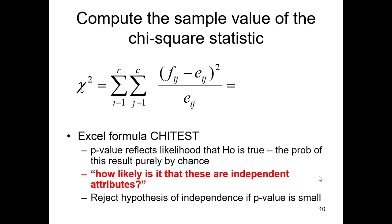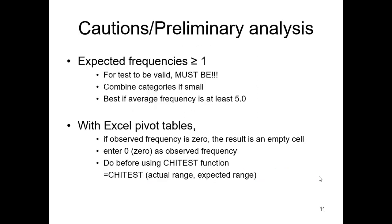Or we could use the chi-test function in Excel. And we'll show how to do that in a different tutorial. The p-value reflects the likelihood that H0 is true, probability of result clearly by chance. The bigger that p-value is, less likely we are to reject H0. Smaller the p-value is, more likely we are to reject H0. A couple of things to keep in mind as we do this: the expected frequencies must be greater than or equal to one for the test to be valid. So very similar to what we had with goodness of fit. Combined categories if they're too small. And as it was the case with goodness of fit, it's best if the average frequency is at least five.